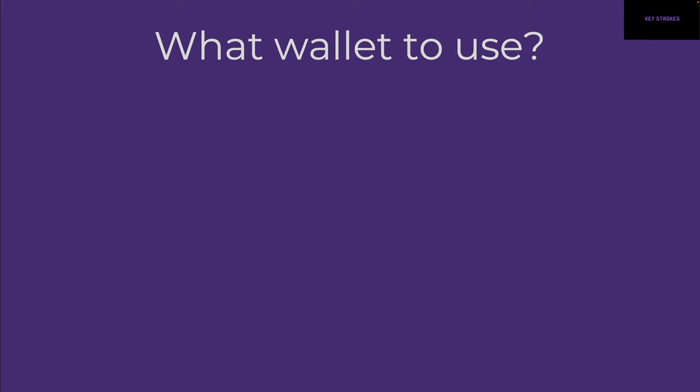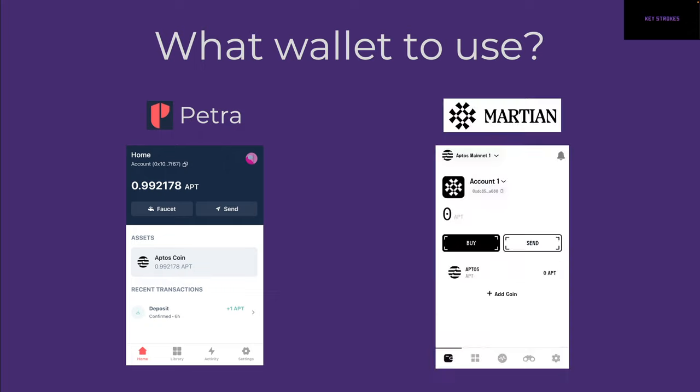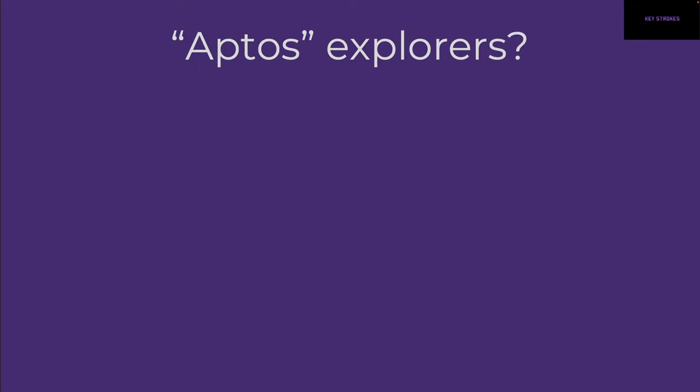Now let's talk about how you can get hands-on. First, which wallet do we use with Aptos? Based on what I found, we have Petra Wallet and Martian Wallet — they both look pretty cool, but Petra Wallet is mentioned in the official documentation and that's what I've been using. I think either of these work.